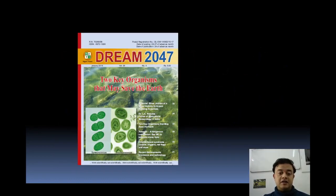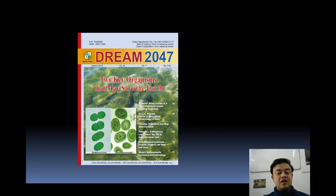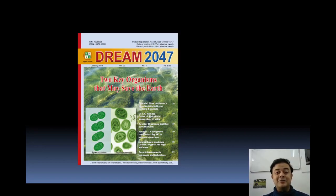If you take a drop of water from anywhere in the world's oceans, you can see a rich diversity of picoplanktons — nothing but cyanobacteria. I wrote an article featured in 'Dream 2047,' a popular science magazine by the Government of India. The cover story title is 'Two Key Organisms That May Save Earth.' The two organisms are Synechococcus and Prochlorococcus.